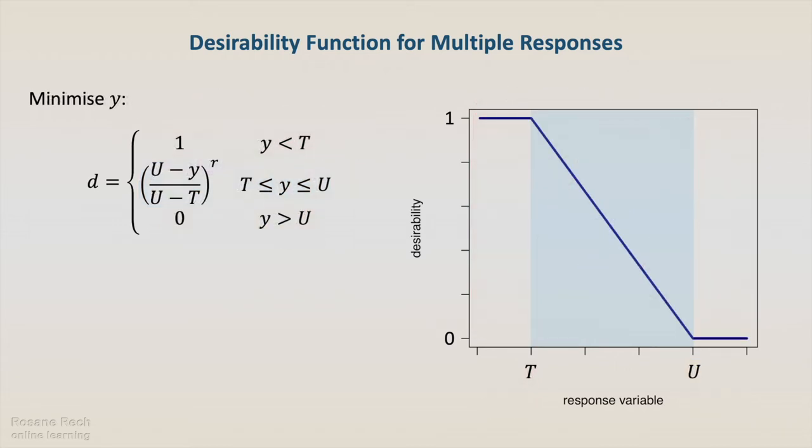In the same way, we have desirability function for the cases when the objective is to minimize the response variable. In this case, the function returns 1 if the response is lower than the target value, returns 0 if the response is higher than a defined threshold or upper limit, and returns a value between 0 and 1 if the response lies between the target and the upper limit.